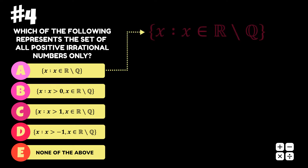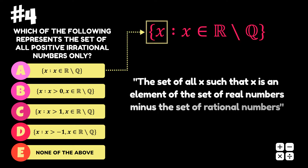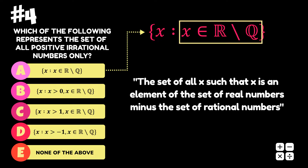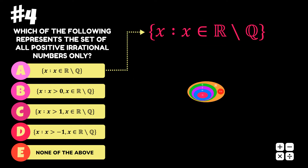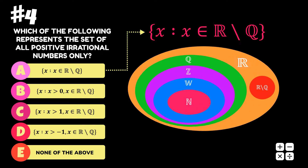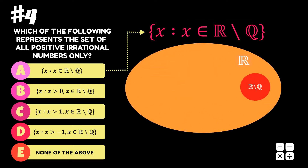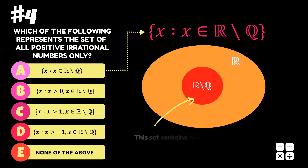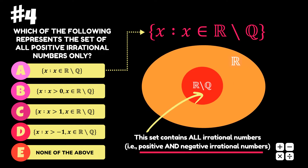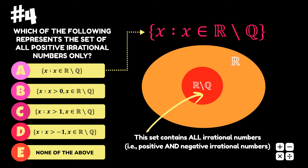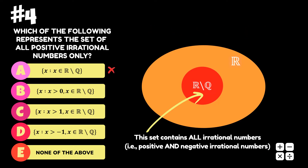Welcome to Option A. We can describe this set as the set of all x such that x is an element of the set of real numbers minus the set of rational numbers. The set of real numbers minus the set of rational numbers is the set of irrational numbers. But this set contains positive and negative irrational numbers. We want a set that contains only positive irrational numbers, so Option A is incorrect.